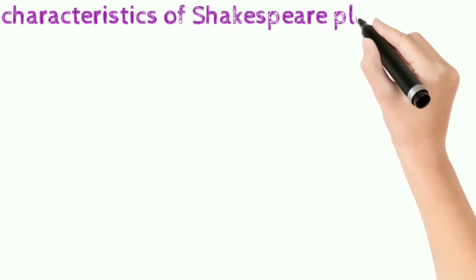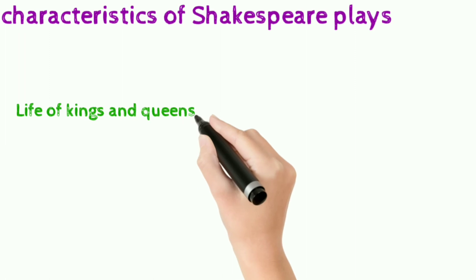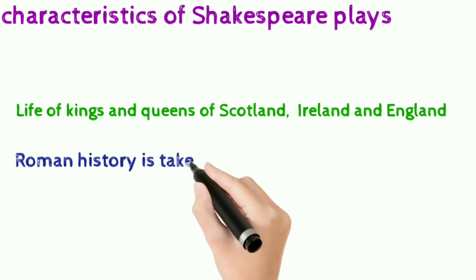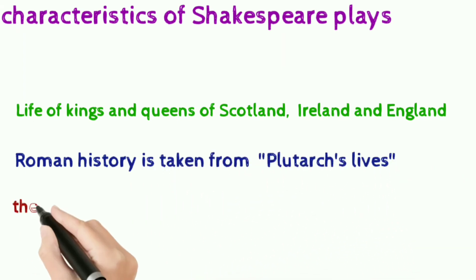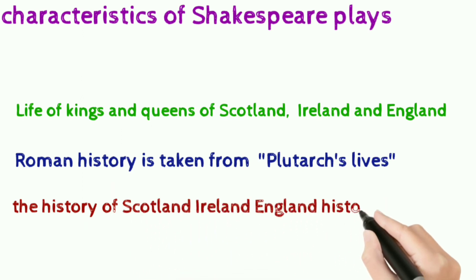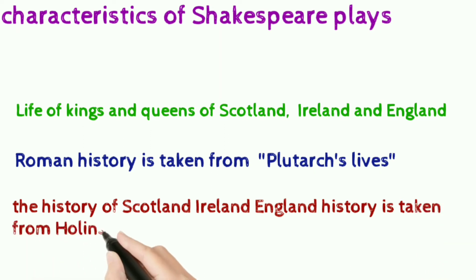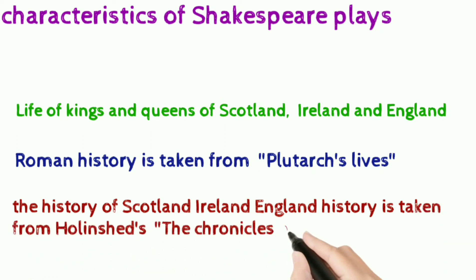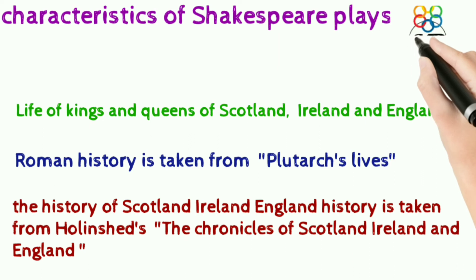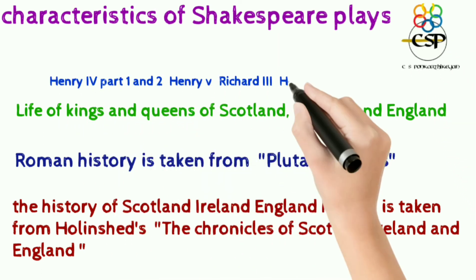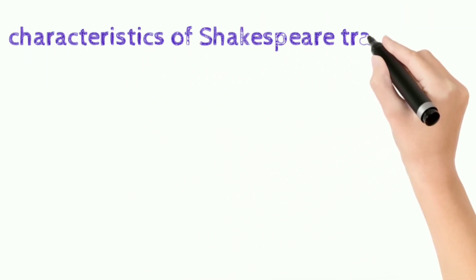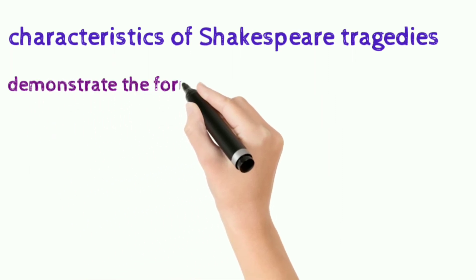The chronicle plays are none other than history plays, depicting the lives of kings and queens of Scotland, Ireland, and England. The source for these plays was taken from Holinshed's Chronicles of Scotland, England, and Ireland. For the Roman plays, the source is taken from Thomas North's translation of Plutarch's Lives. His famous plays include Henry IV, Henry V, Richard II, Richard III, and Julius Caesar.